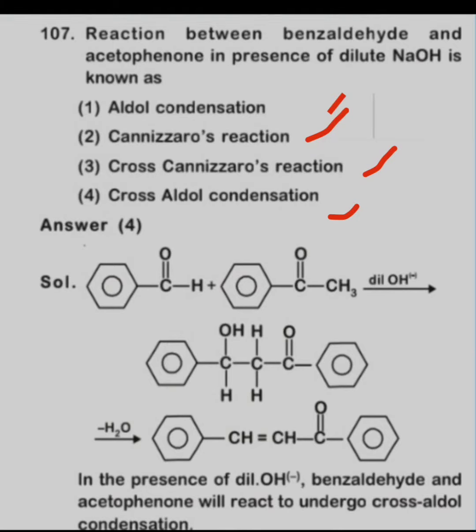Cross aldol condensation is the reaction in which two different types of aldehydes and ketones condense with each other in the presence of dilute NaOH and give an aldol product. So the correct answer is the fourth option — cross aldol condensation.